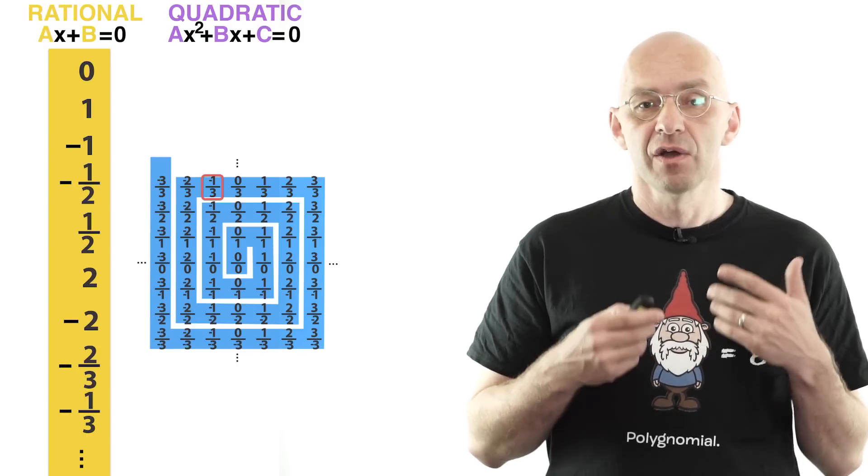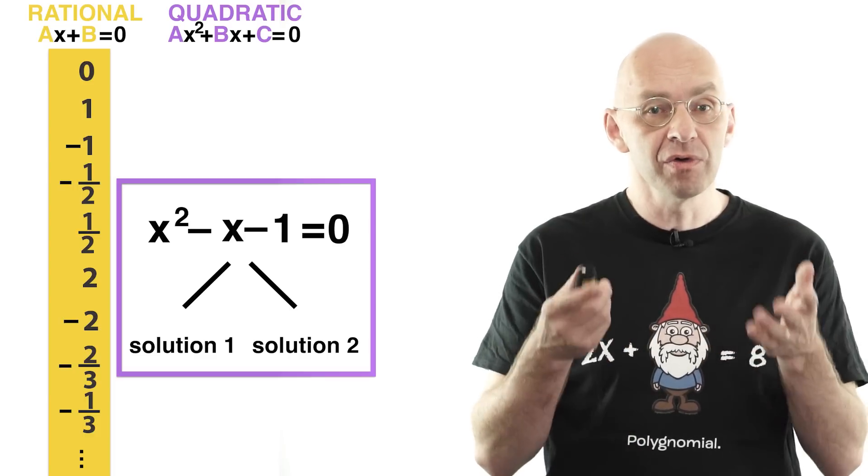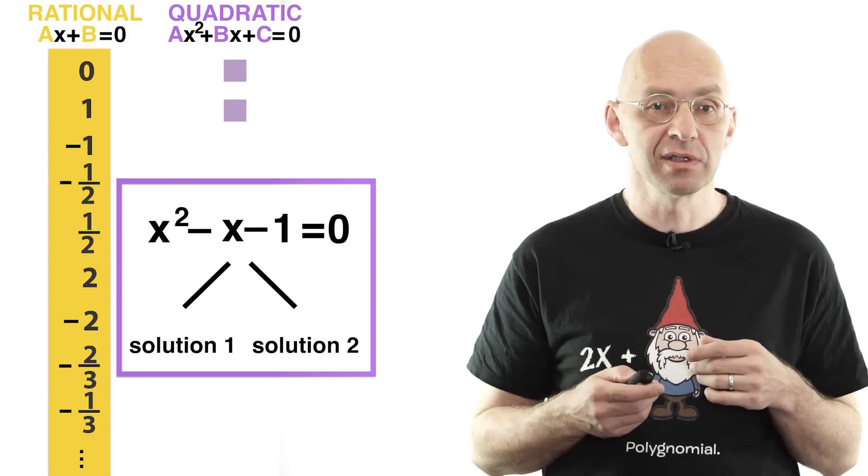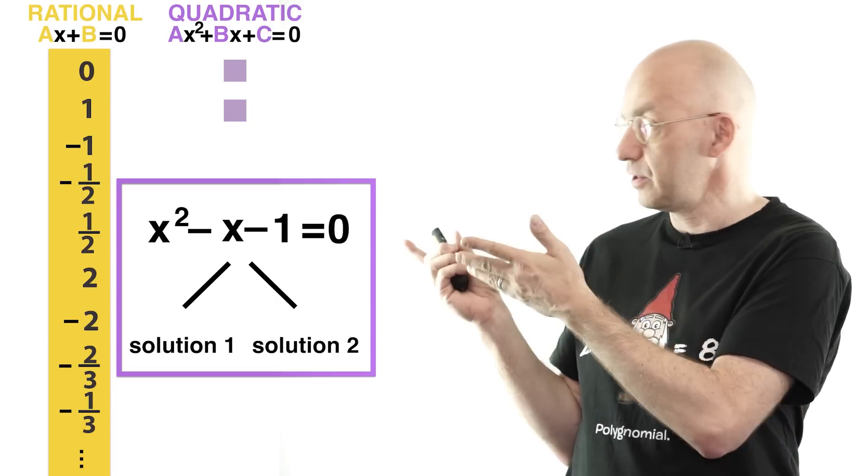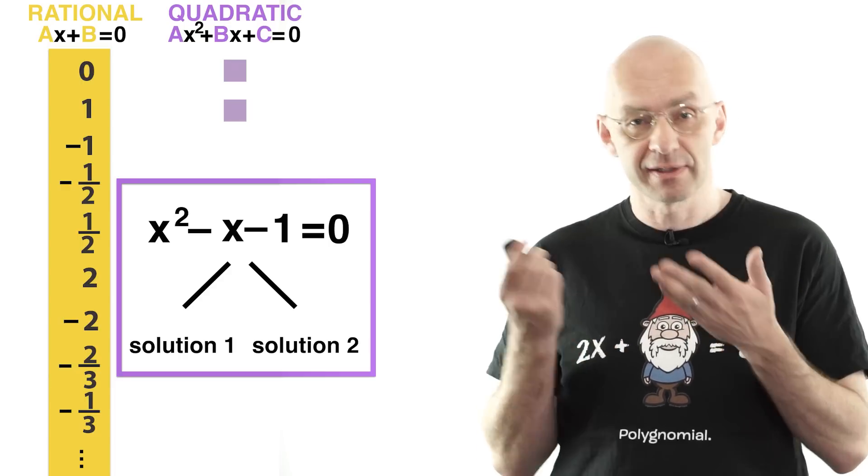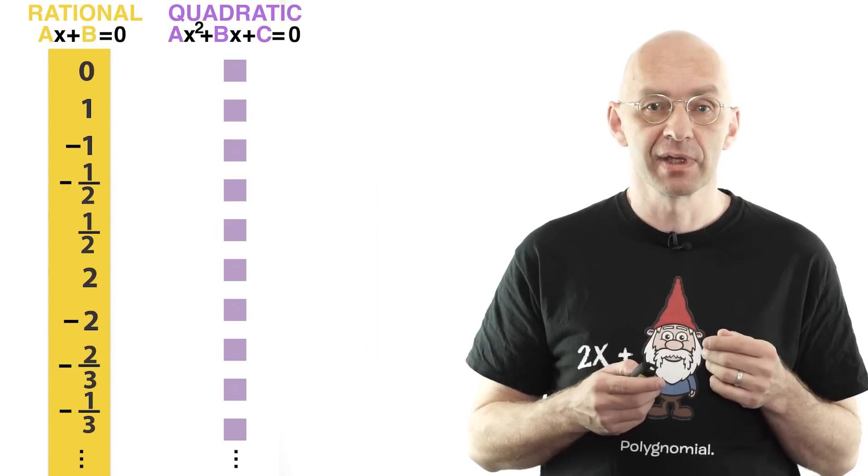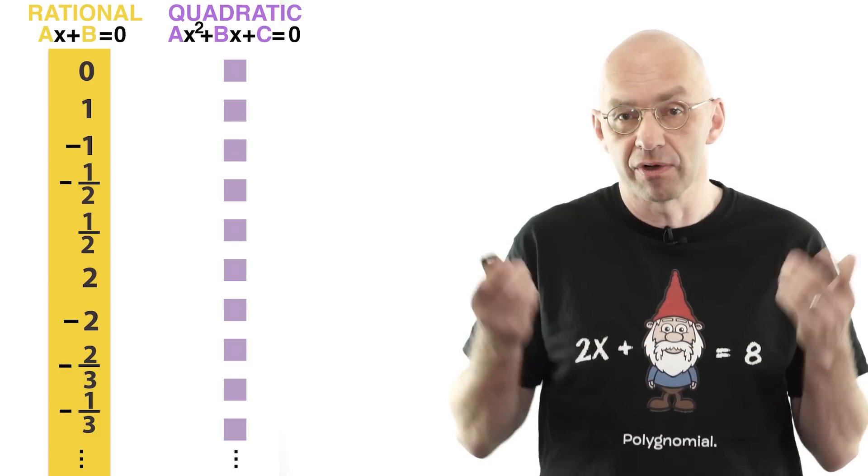Okay, for every quadratic equation that we come across in this way, we add those among its solutions to our new list that are neither fractions and therefore already part of the first list there, nor quadratic irrationals that we've already seen in this second process. And in this way we list all the quadratic irrationals, including root 2 and the golden ratio, for example.